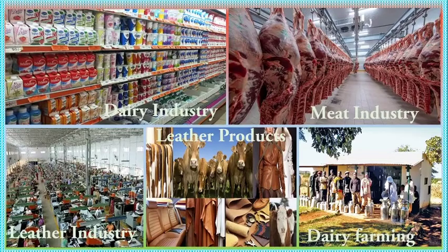Cattle are of great economic importance in the world. We cannot overemphasize the role they play. The photographs displayed depict a few sectors which are driven by cattle directly and indirectly. Number one, they provide milk which is a raw material for manufactured products such as butter, cheese, and yogurt, to mention but a few, and is an ingredient of many beverages and dishes. According to bizvive.com, approximately 800 million tons of milk were produced in 2019 globally.